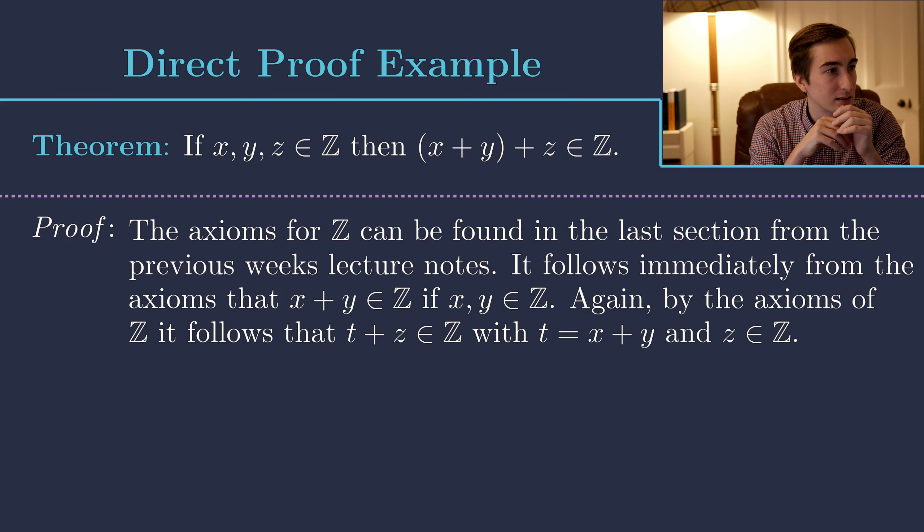It's also worth noting that it was an axiom that addition on the integers is associative — that (x + y) + z equals x + (y + z). This follows from the axiom we wrote down about how addition works on the integers. This example shows directly from the axioms of the integers that the statement is true, without modifying the statement in any way, so it is an example of a direct proof.